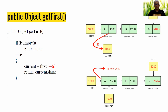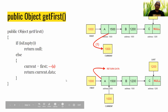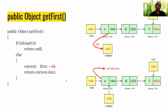Next, we look at how to access nodes in the linked list. There are two accessor methods: getFirst and getNext. Let's start with getFirst, which retrieves the first node in the linked list.